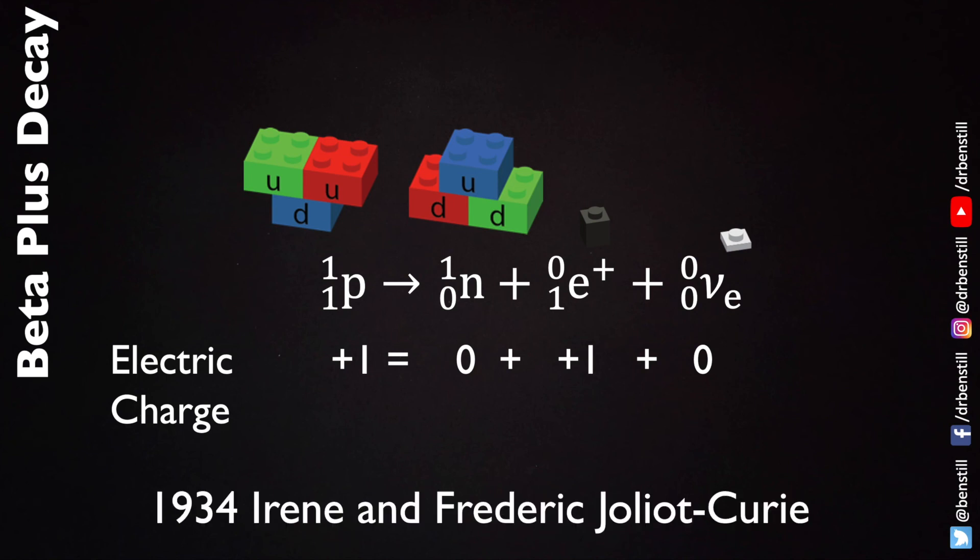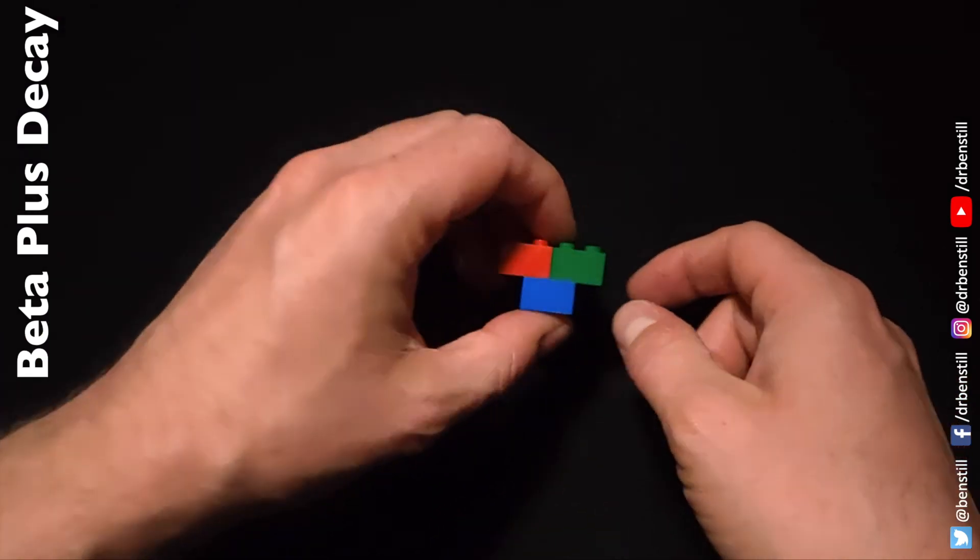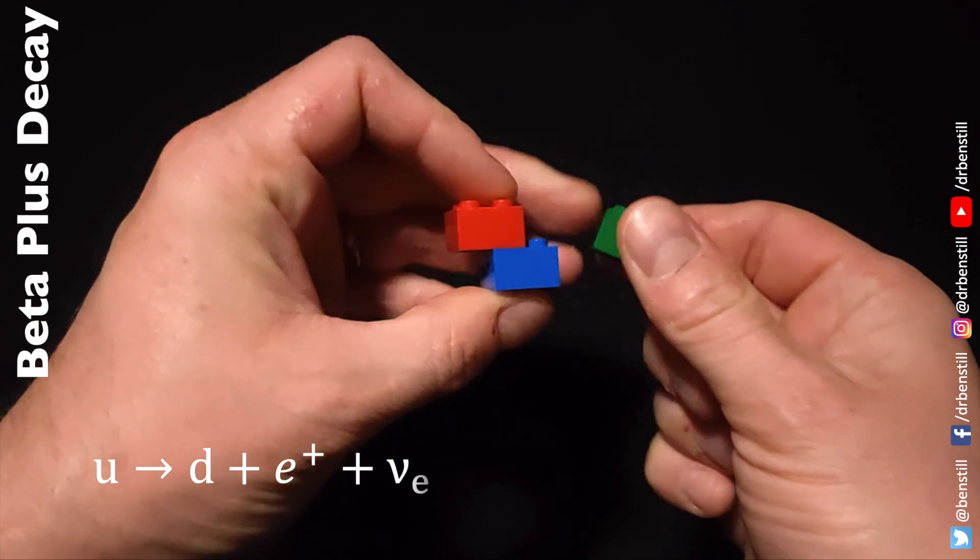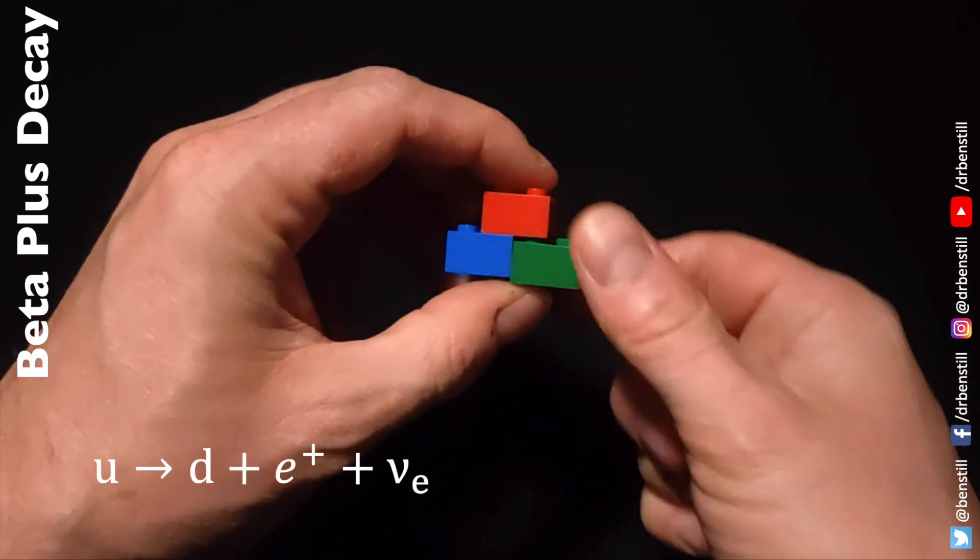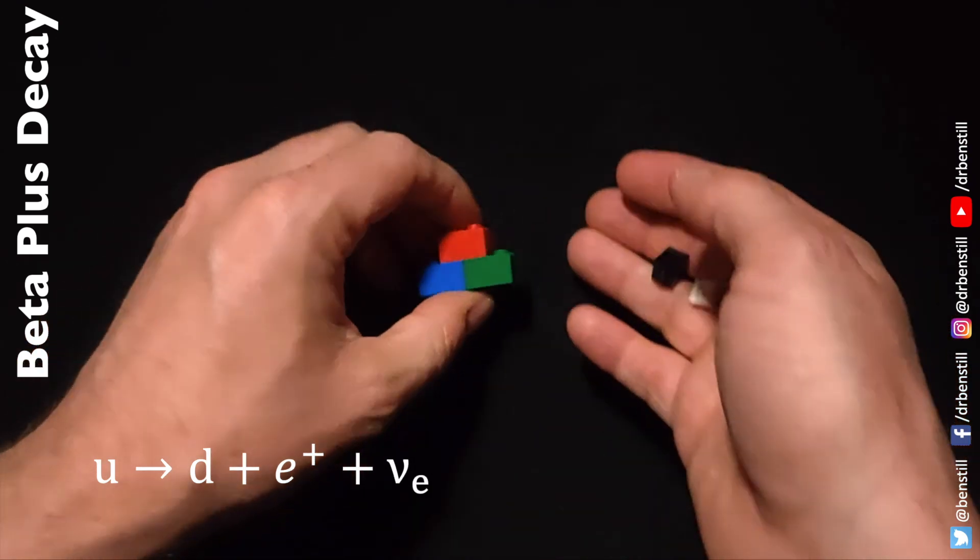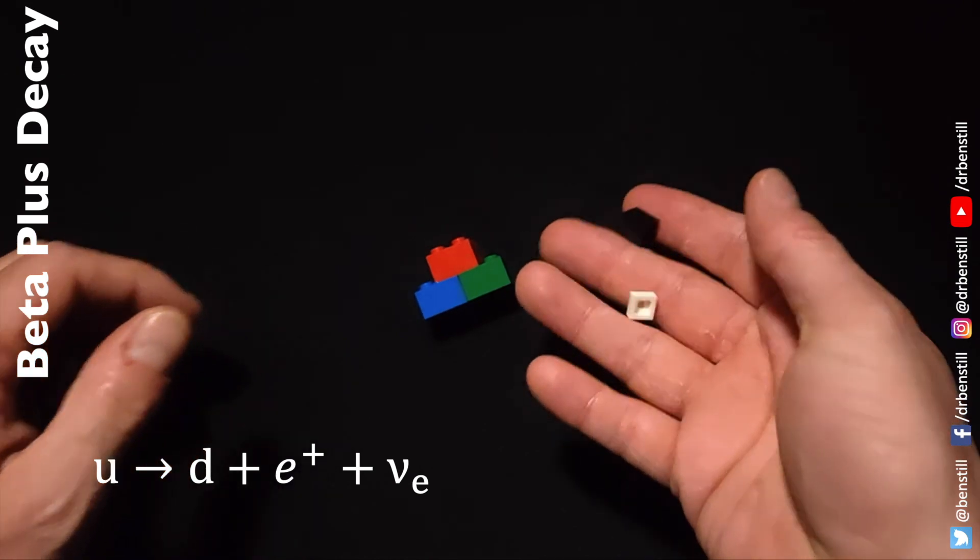This was discovered in 1934 by Irene Frederick Joliot-Curie and interestingly the same year Enrico Fermi came up with his first theory of the weak nuclear force. Essentially what's happening in beta plus decay is that this proton is turning into a neutron because an up quark is being turned into a down quark and in the process a positron and electron neutrino are also emitted.